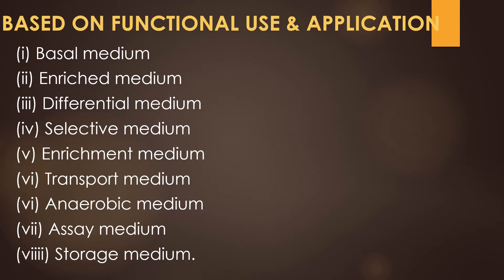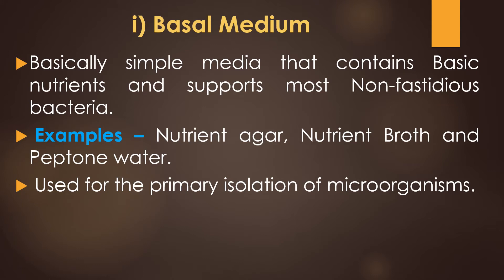Based on functional use and application, culture media are categorized into eight types, which represent the major classification. The eight types are: basal medium, enriched medium, differential or indicator medium, selective medium, enrichment medium, transport medium, anaerobic medium, assay medium, and storage medium. The basal medium is a simple medium that contains basic nutrients and supports most non-fastidious bacteria.